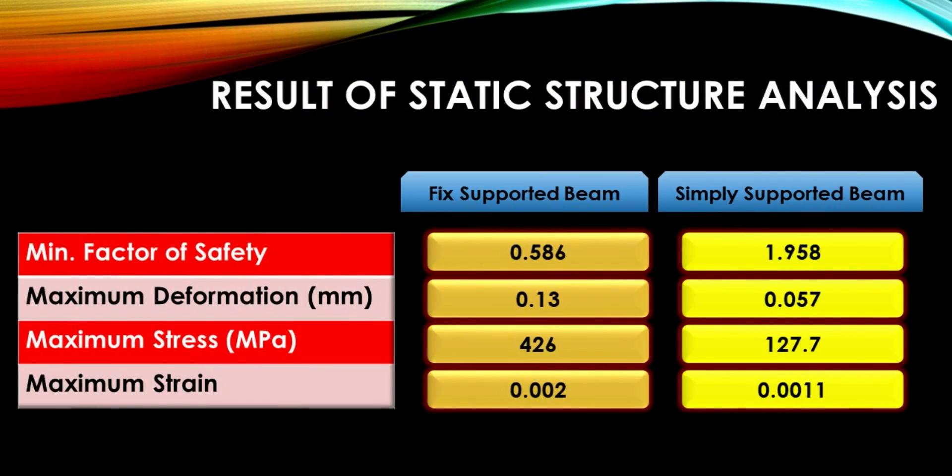Results of the FEA simulation reflect how critical boundary conditions are in the modeling process. A wrong boundary condition can lead to completely wrong estimation of factor of safety, maximum stress, and displacement of structure. In our example, as you can see, factor of safety for fixed support is below one and almost one fourth of that estimated using simply supported beam.